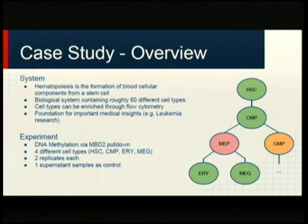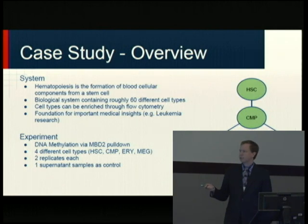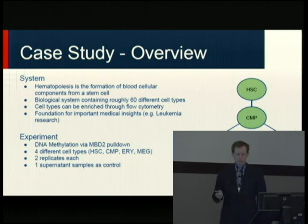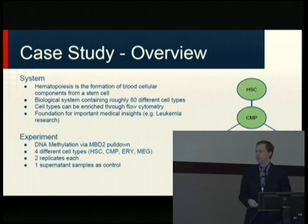The lab I'm working in is a wet lab focused on hematopoiesis — the formation of blood cellular components. We performed DNA methylation analysis for four out of 60 different cell types: stem cells differentiating towards red blood cells or platelets. We picked four cell types, looked at their DNA methylation profiles using two replicates and one control.